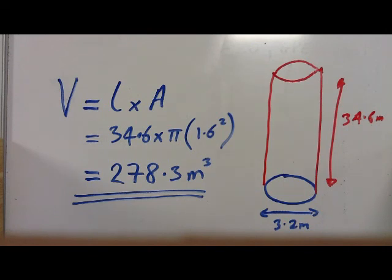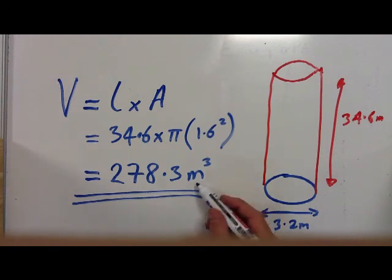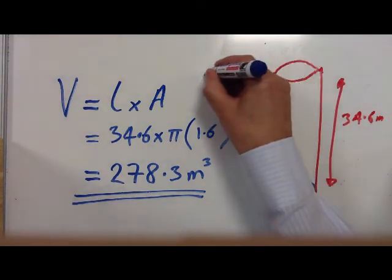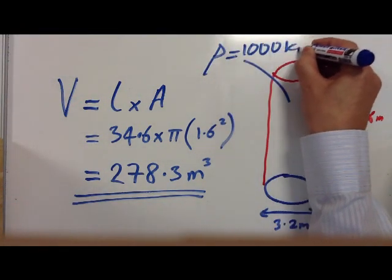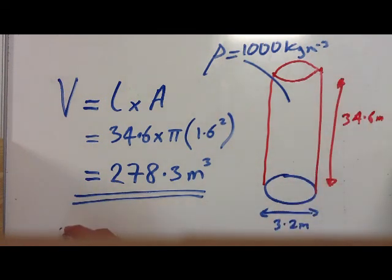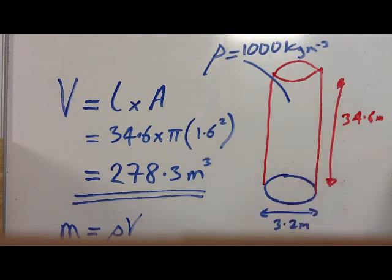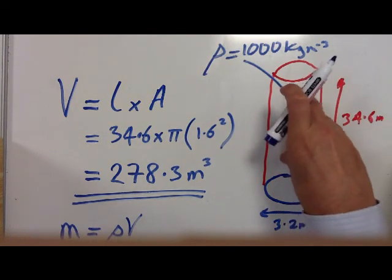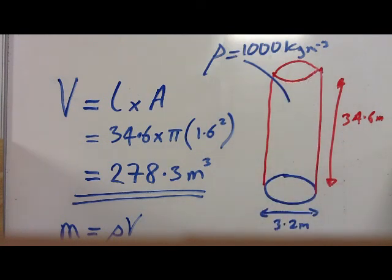Question C asks about maximum power output. Power output is just the energy transferred in one second. We know the volume of this water and the density is 1,000 kilograms per metre cubed, so we can work out the mass using mass equals density times volume. We then work out the total kinetic energy of the water using its velocity from earlier and its mass. The total kinetic energy transferred in one second gives us the power output, because power is energy per second.